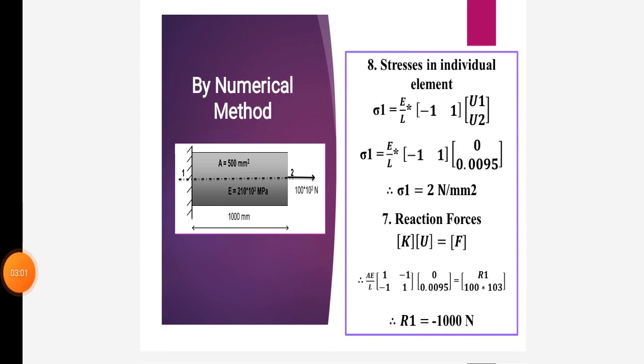In the next step, there is stress in the individual element. Sigma 1 is equal to E upon L times the matrix [-1, 1] into [U1, U2]. So after solving this matrix, sigma 1 is equal to 2 Newton per mm².